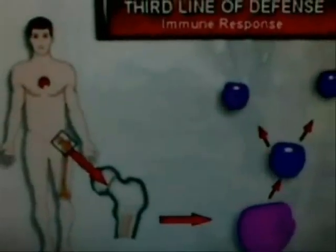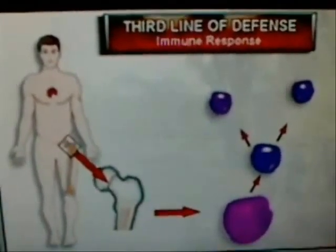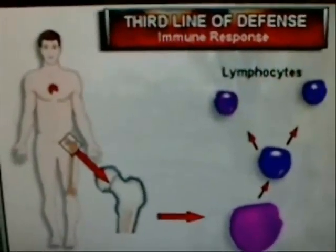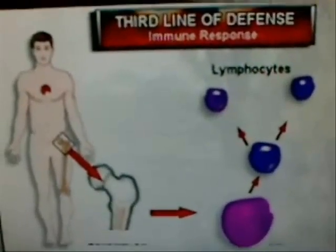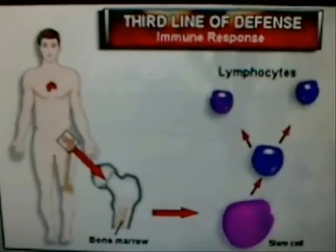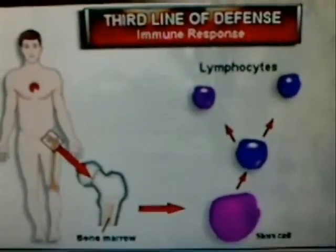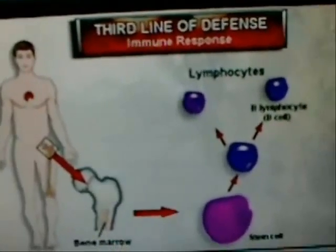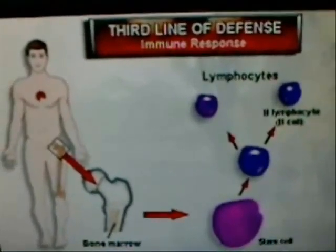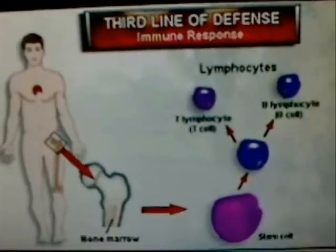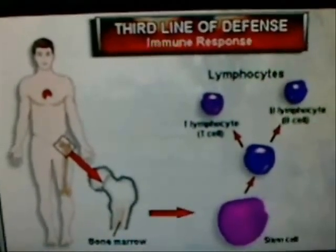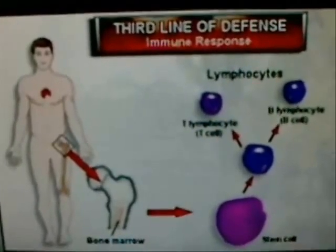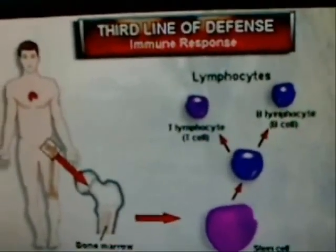The cells responsible for recognizing and destroying foreign antigens are white blood cells called lymphocytes. Lymphocytes, like all other blood cells, originate from stem cells in the bone marrow. Later, they become one of two kinds: B-lymphocytes, also called B cells, or T-lymphocytes, also called T cells. Whether a lymphocyte develops into a B cell or a T cell depends on where it matures. Lymphocytes that become B cells mature in the bone marrow, while those that become T cells mature in the thymus.